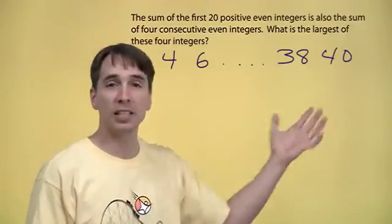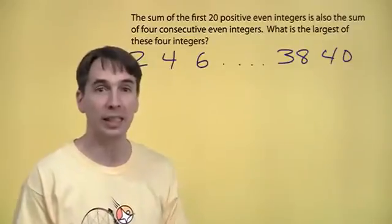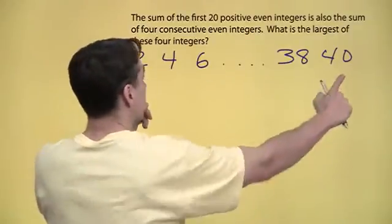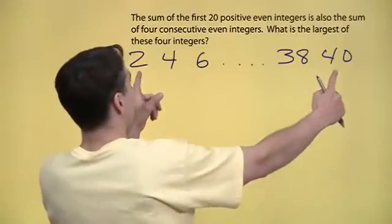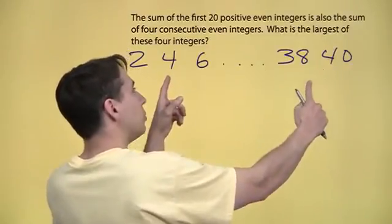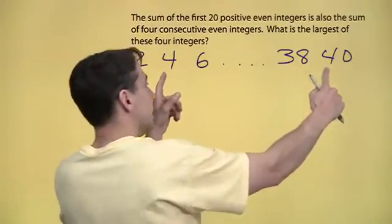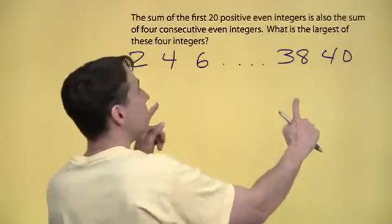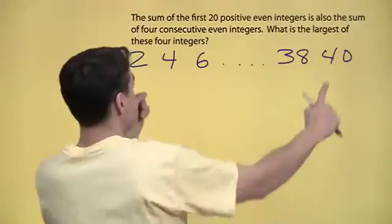And how do we find the sum? These are evenly spaced out. That makes finding the sum of them really easy. Take the first one and the last one, 40 and 2. That's 42. And then we go up from the 2. We go up by 2. And then from the 40 we go down by 2. Since we're going up and down by the same amount, the sum of these two is the same as the sum of these two.